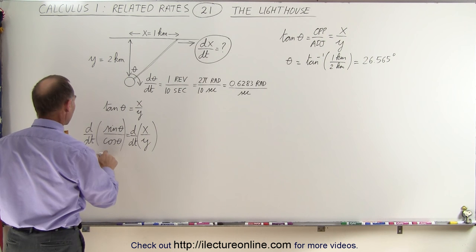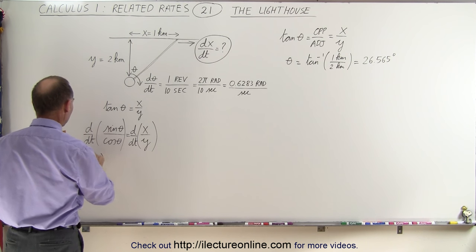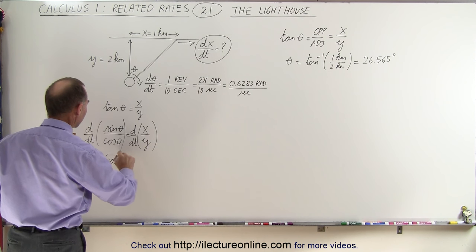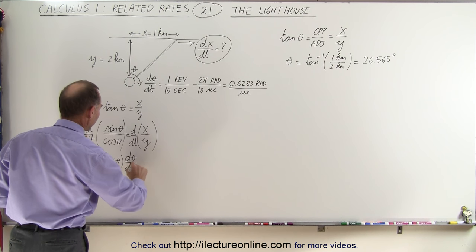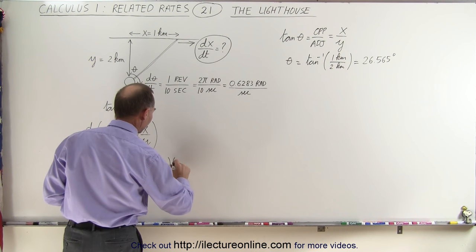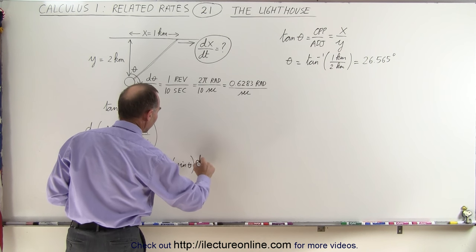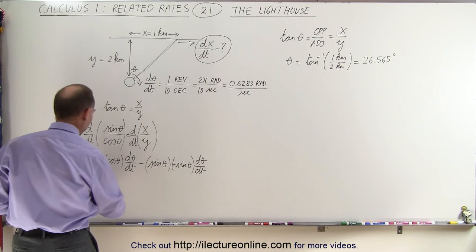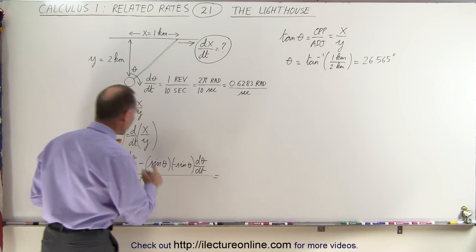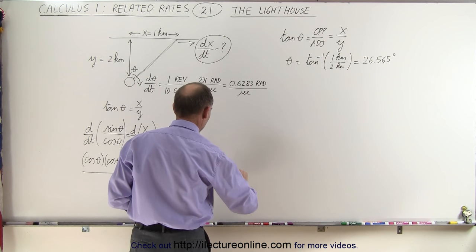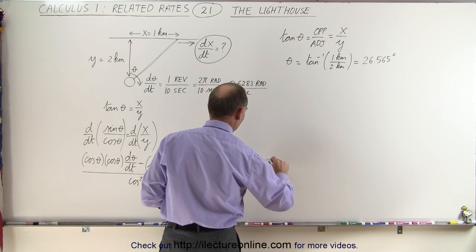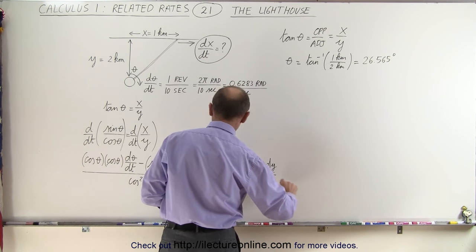Since these are quotients, we take the denominator times the derivative of the numerator—that would be cos(θ) times dθ/dt—minus the numerator sin(θ) times the derivative of the cosine, which is negative sin(θ) times dθ/dt, all divided by the denominator squared, which is cos²(θ). We set that equal to the derivative of the right side, which is the denominator times the derivative of the numerator minus the numerator times the derivative of the denominator, all divided by the denominator squared.